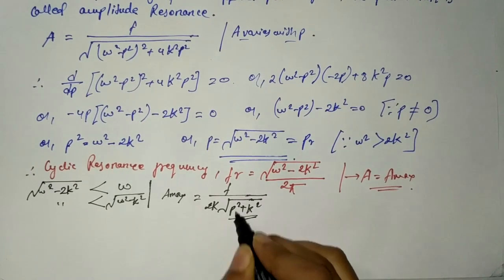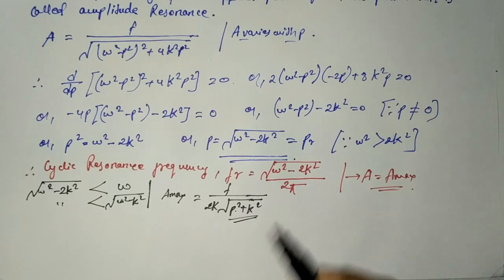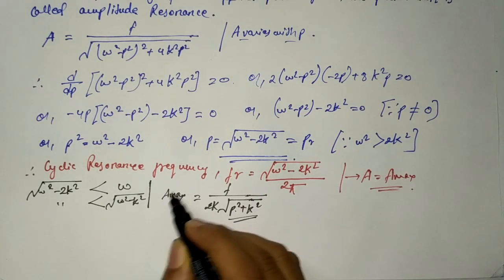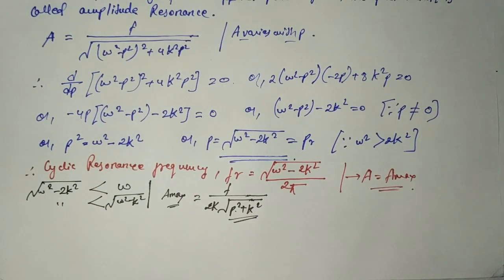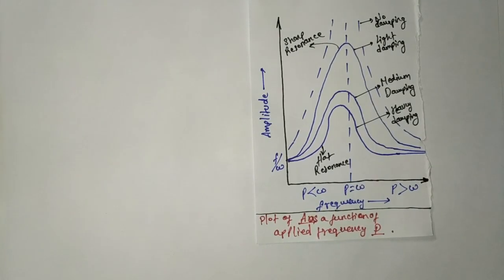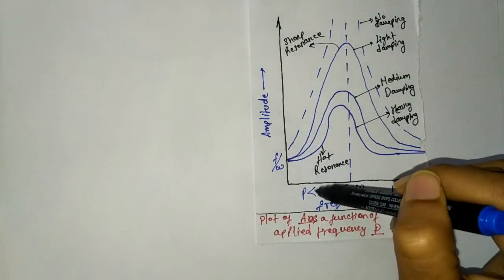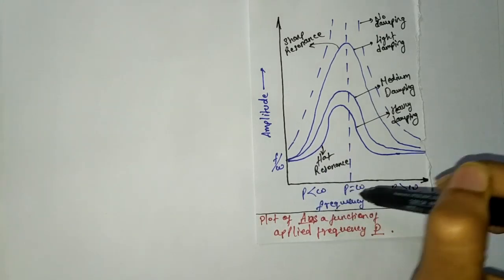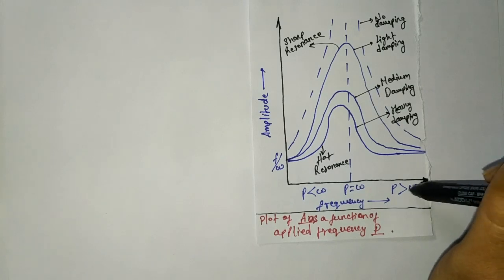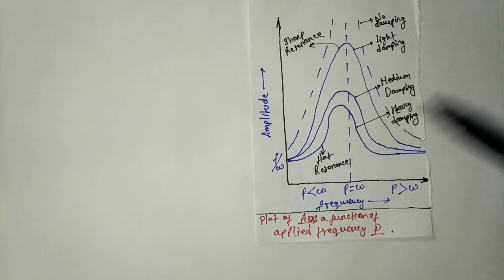Here p equals square root of (omega squared minus 2k squared), and this shows that the maximum amplitude A_max depends upon the damping factor k. The variation of amplitude A with frequency of the applied force p for different values of damping constant k is shown in the diagram — a plot of amplitude as a function of applied frequency p, covering regions where p is less than omega, p equals omega, and p is greater than omega.